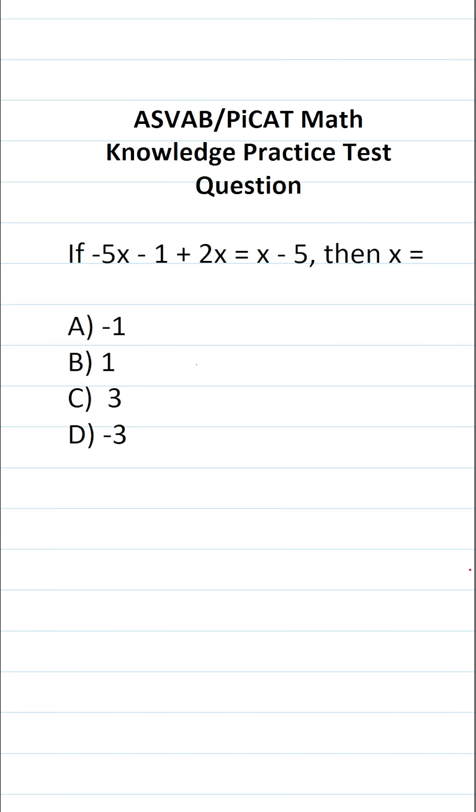This math knowledge practice test question for the ASVAB and PICAT says, if negative 5x minus 1 plus 2x equals x minus 5, then x equals.